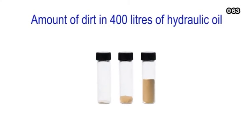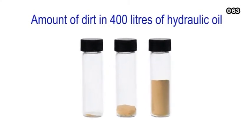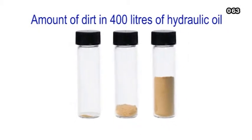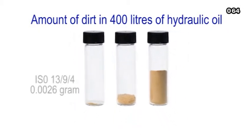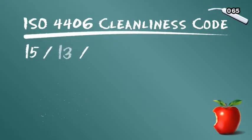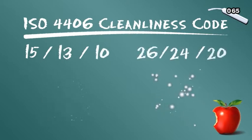Looked at another way, the dirt in these three glass containers each represents a different ISO 4406 cleanliness level. From a tiny fraction of a gram on the left, to about a third of a gram in the middle, to almost 5 grams of dirt on the right. Note how the three cleanliness code numbers also get progressively higher to indicate more dirt and less oil purity.